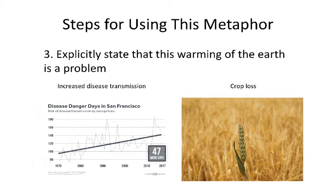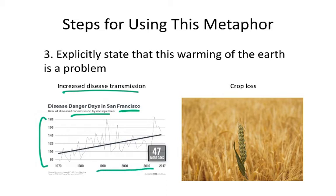If you want to focus on human health impacts, you might focus on something like increased disease transmission. This graph shows the disease danger day in San Francisco — the risk of disease transmission by mosquitoes, with risk on the y-axis and year on the x-axis. There's a general trend of increase: we have 47 more days in 2017 where there is a danger of transmitting mosquito-borne diseases than in the past. Under warmer temperatures, we see higher transmission of diseases — mosquitoes, dengue fever, cholera — so increased disease transmission is one way climate change is affecting communities.